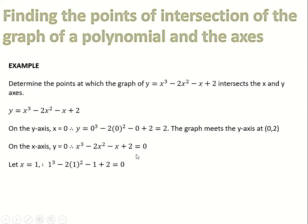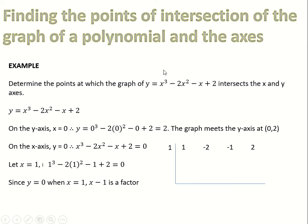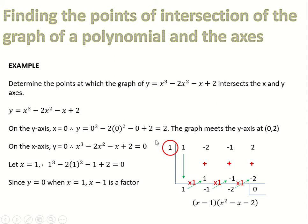We want to factorize this fully. We don't know any factors just yet, so we're going to try and find one. I've tried x equals 1 and it works here — this won't always work. Since y equals 0 when x equals 1, x minus 1 is a factor. Using synthetic division with coefficients 1, minus 2, minus 1, and 2, dividing by 1: 1 times 1 is 1, 1 plus minus 2 is minus 1, times 1 is minus 1, add minus 1 gives minus 2, times 1 is minus 2, add 2 is 0. So the quotient gives us x squared minus x minus 2, and factorizing further gives x minus 1, x minus 2, x plus 1.